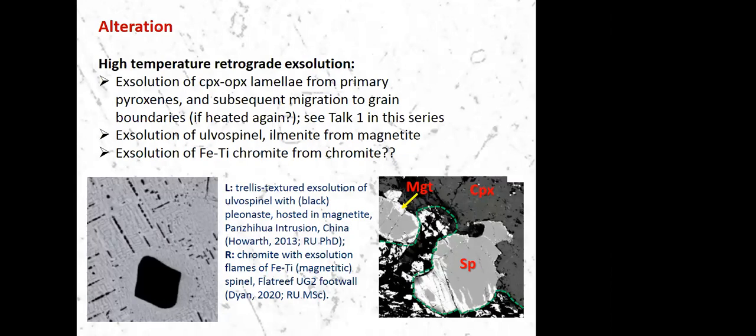So, for example, on the bottom, well, the top point on my slide here is the clinopyroxene orthopyroxene lamellae during pyroxene unmixing. And then the subsequent migration of those lamellae to the grain boundaries. And this is something that I talked about in the first talk in this series, so we won't go into it again. But it ends up producing kind of enigmatic looking clinopyroxene rims on orthopyroxene, which you could potentially interpret in various ways.